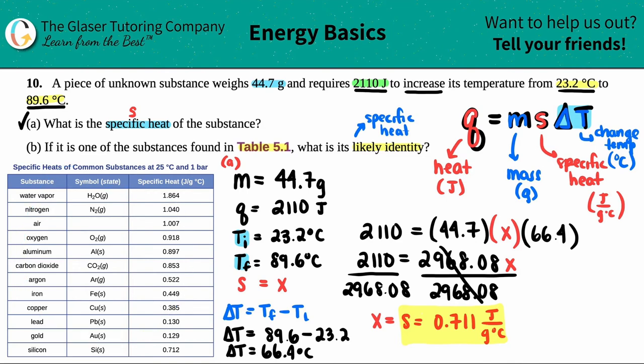So I'm going to look on my chart for a 0.711 or closely to that. And here is that table 5.1 that they were showing. I'm just going to look down, and I see that I have silicon being the closest match. The specific heat is 0.712; mine is 0.711. So what's the identity of the substance? It's silicon, or Si, and that's a solid, so it's in the solid state. And that's the answer for me.